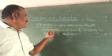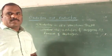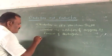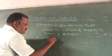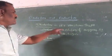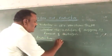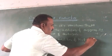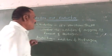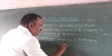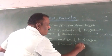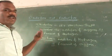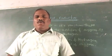Oxidation is the reaction that involves the addition of oxygen or removal of hydrogen. Reduction is the reaction that involves addition of hydrogen or removal of oxygen.